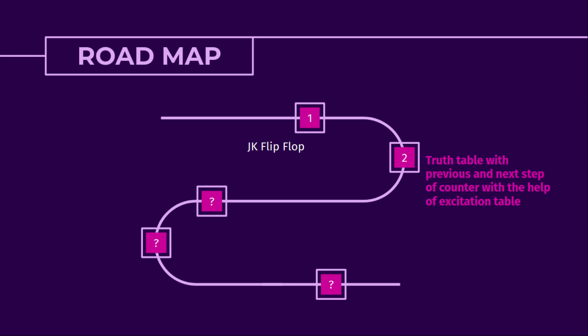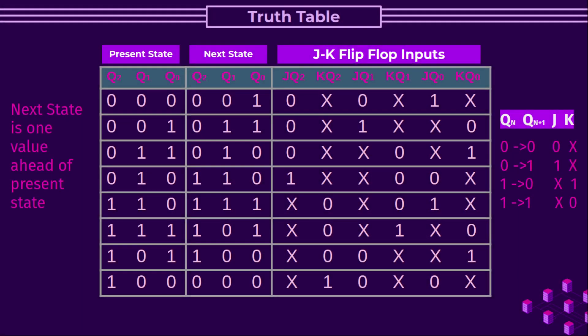Next, we will build the truth table with present and next state of the counter using the JK flip-flop excitation table. The present state column shows the progression of gray codes from 0 to 7. The next state is the state the counter goes to upon application of a clock pulse — the next gray code in circular fashion. Finally, we have inputs for JK flip-flops: JQ2 and KQ2 for transitions of Q2, JQ1 and KQ1 for Q1, and JQ0 and KQ0 for Q0.